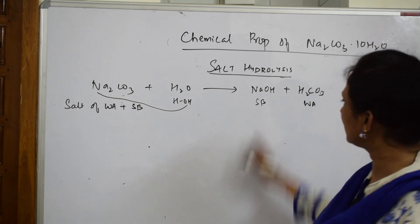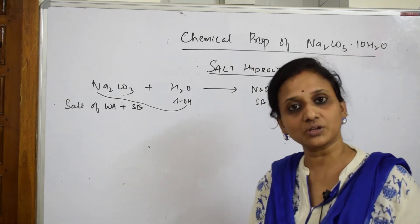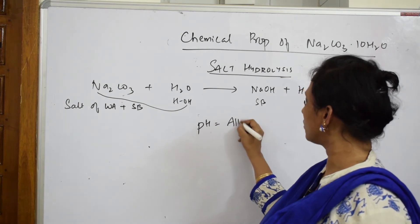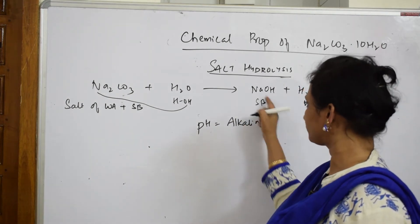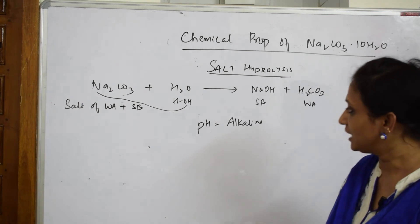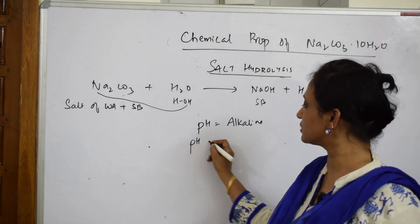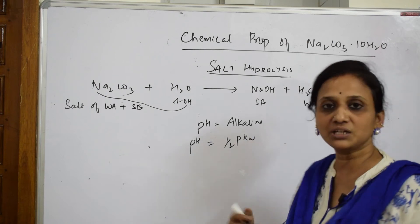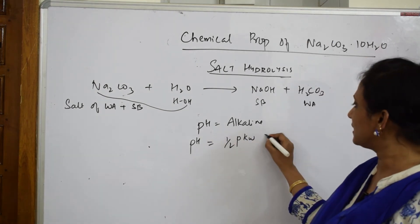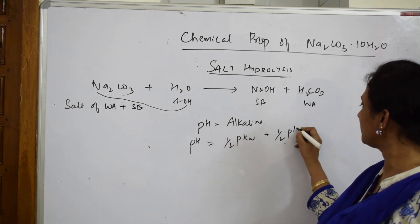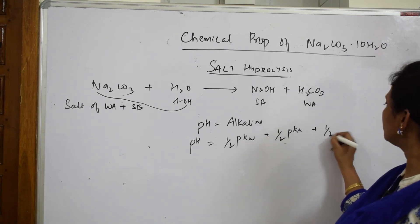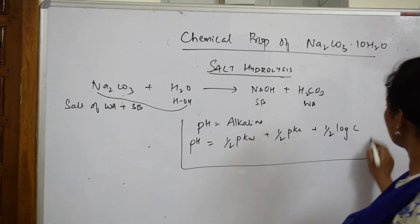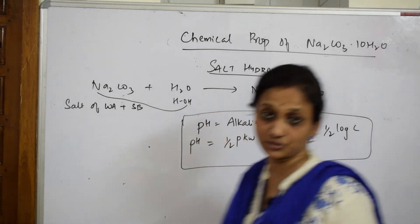Sodium hydroxide is a strong base and carbonic acid is a weak acid, so overall the solution is alkaline in nature. The pH of the solution is above 7. To calculate the pH numerically, the formula is: pH = ½ pkw + ½ pk_a + ½ log C.